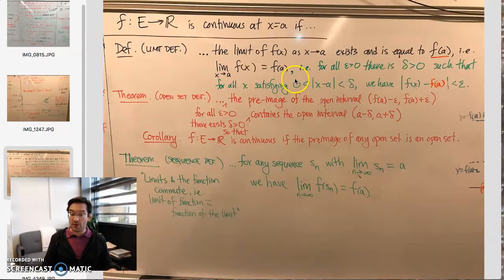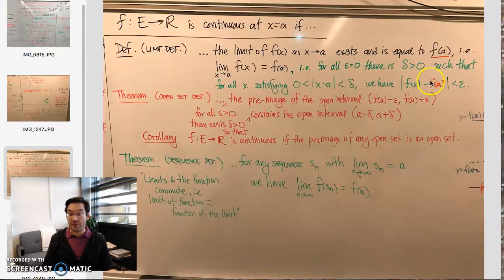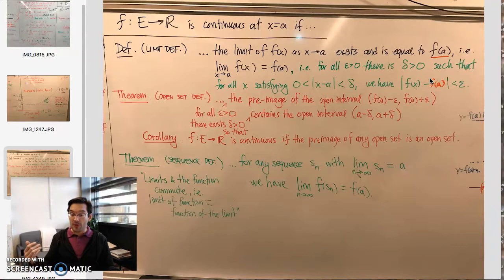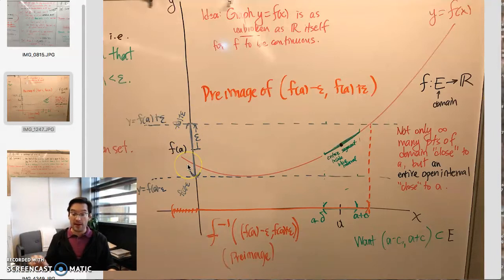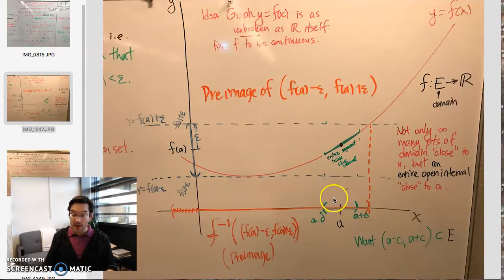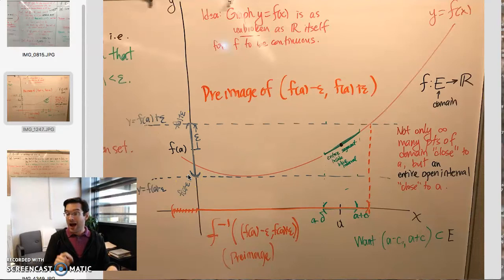Because the notion of an open interval is embedded within this definition — we're really saying x belongs to the open interval A minus delta to A plus delta, and f of x belongs to the open interval f of A minus epsilon to f of A plus epsilon — the definition of open set and interior point is secretly embedded within the limit definition. This leads us to the open set definition of continuity: if you give me an open interval centered at f of A, I can give you an open interval centered at A, all of whose points map inside your open interval.